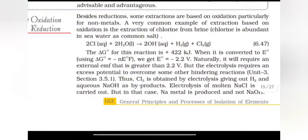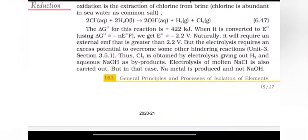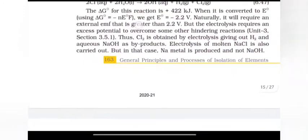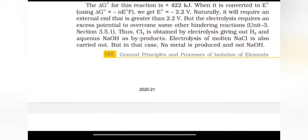ΔG for reaction is plus 422. Then it is converted to E using ΔG = -nEF. We get E = -2.2 volt. Naturally, it will require an external EMF that is greater than 2.2 volt. But the electrolysis requires an excess potential to overcome some other hindering reactions. Thus, Cl2 obtained by electrolysis giving out hydrogen and aqueous NaOH as byproducts.